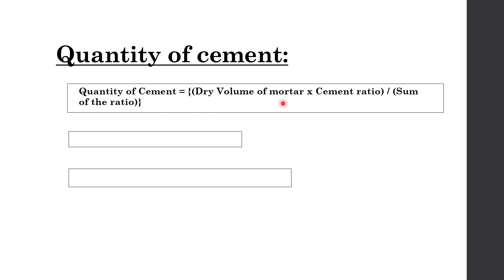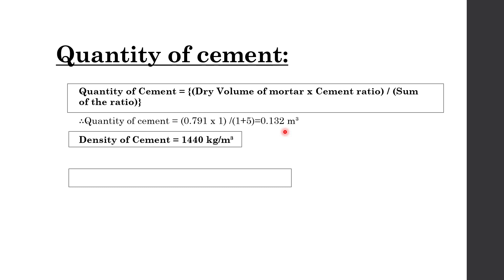Now let's calculate the quantity of cement. To calculate the quantity of cement, you have to remember a simple formula: dry volume of mortar multiplied by cement ratio divided by sum of the ratio. Therefore, quantity of cement equals 0.791 multiplied by 1, divided by 1 plus 5 — where 1 is the cement ratio and 5 is the sand ratio — giving 0.791 divided by 6, which equals 0.132 cubic meter. We know the density of cement is 1440 kg per cubic meter, so weight of cement equals 1440 multiplied by 0.132, which equals 190.1 kg.